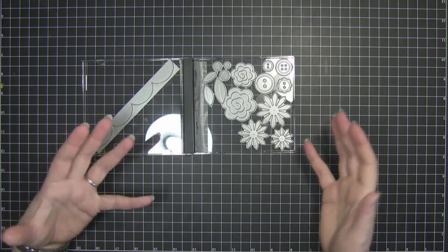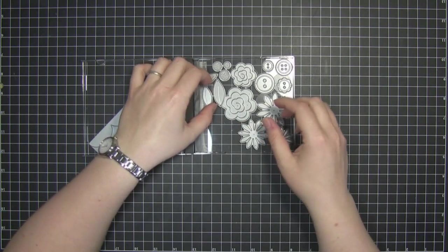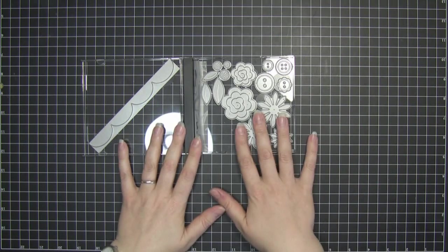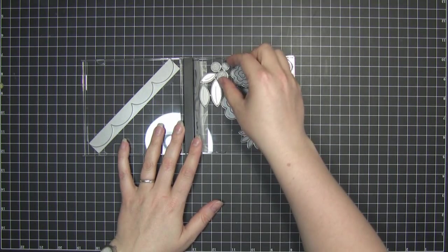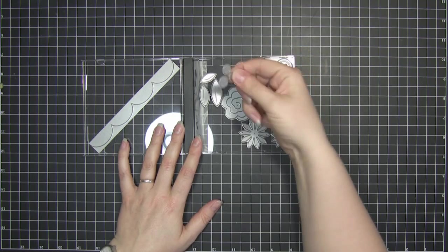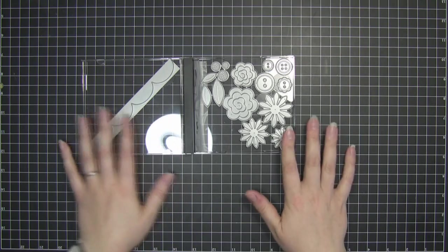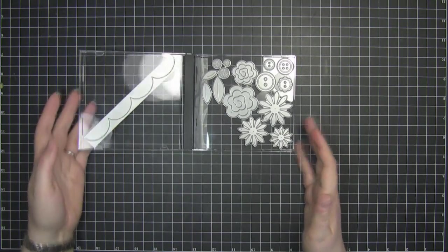And they all come very loose and very, very easy to lose. And I don't want to lose any of these, especially these really tiny, small dies here. So I decided to store mine using magnetic sheets.